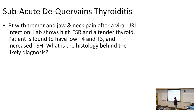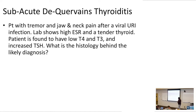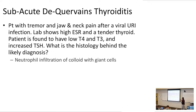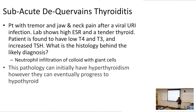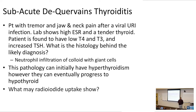Subacute de Quervain's thyroiditis presents with tremor and jaw pain after a viral URI — that preceding viral URI is characteristic. Labs show high ESR and a tender thyroid. Patient may have low T4 and T3 with increased TSH in the late hypothyroid phases. Histology shows neutrophil infiltration of colloid with giant cells. Radioiodine uptake is decreased because the inflamed thyroid doesn't take up the iodide given to it.